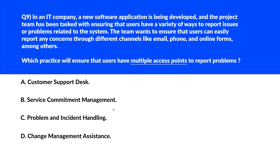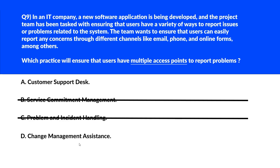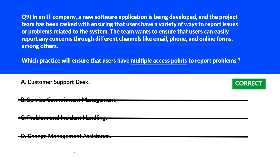Option C — 'problem and incident handling' — the problem resolution process is about managing and resolving problems once identified, but does not guarantee multiple channels for users to report issues initially. We'll eliminate this. Option D — 'change management assistance' — ensures changes are implemented efficiently but doesn't directly relate to providing multiple access points for reporting issues. We'll reject this and lock option A as the right answer.